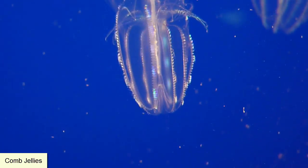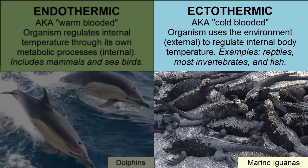We call organisms ectothermic if they have no internal temperature regulation but instead use the external environment to regulate their temperature — also called cold-blooded, though that's not a great term for most ectotherms which may have no blood or might actually have very warm internal temperatures. Ectothermic organisms include most fish, reptiles, and invertebrates.